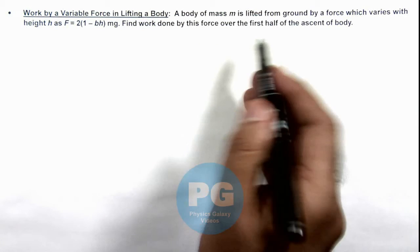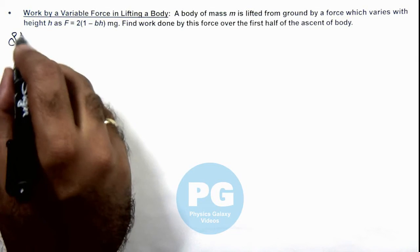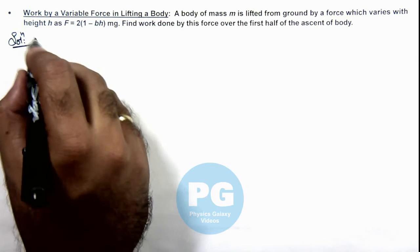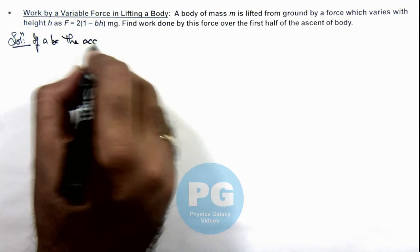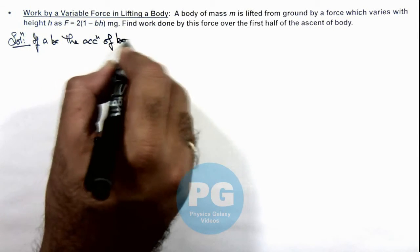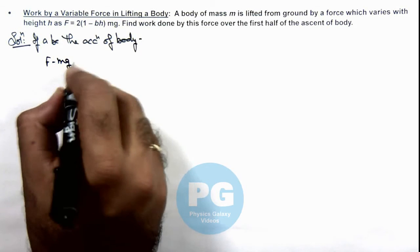First we need to calculate the height to which the body will ascend. So here in solution we can write, if ay be the acceleration of body, here we can write F - mg = may.